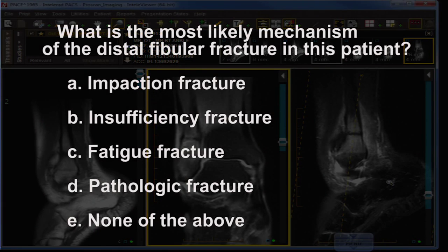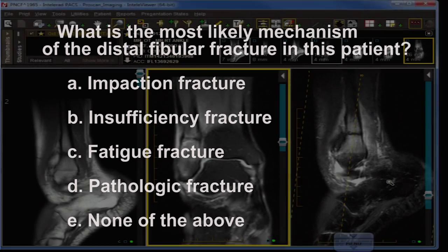What is the most likely mechanism of the obvious distal fibular fracture in this patient? Is it impaction? Is it insufficiency? Is it a fatigue fracture? Is it a pathologic fracture? Or is it none of the above?